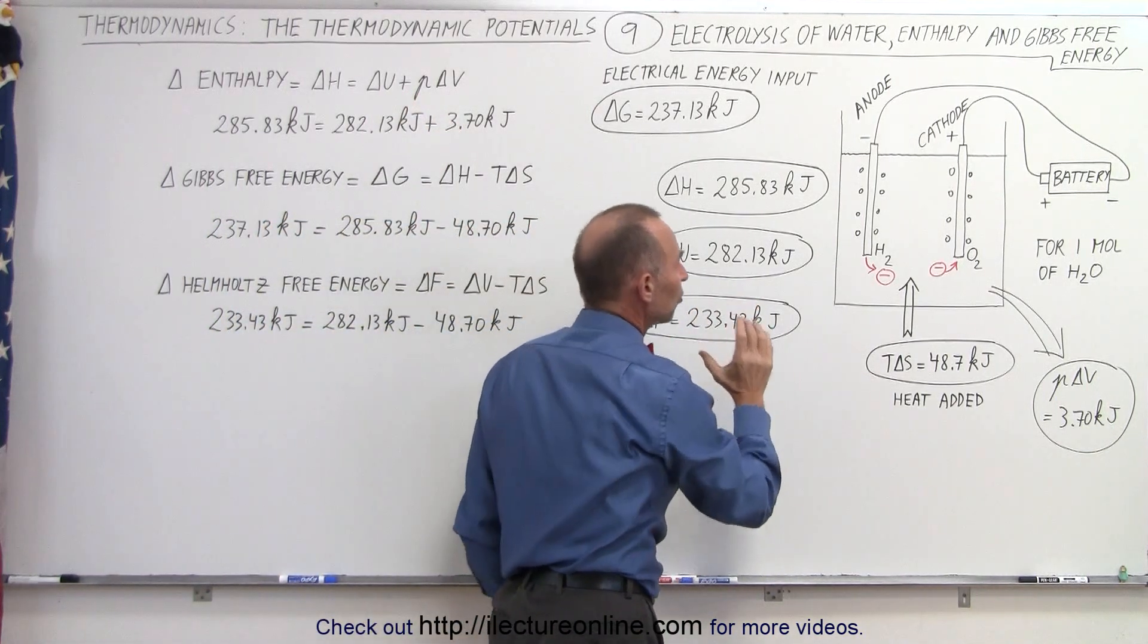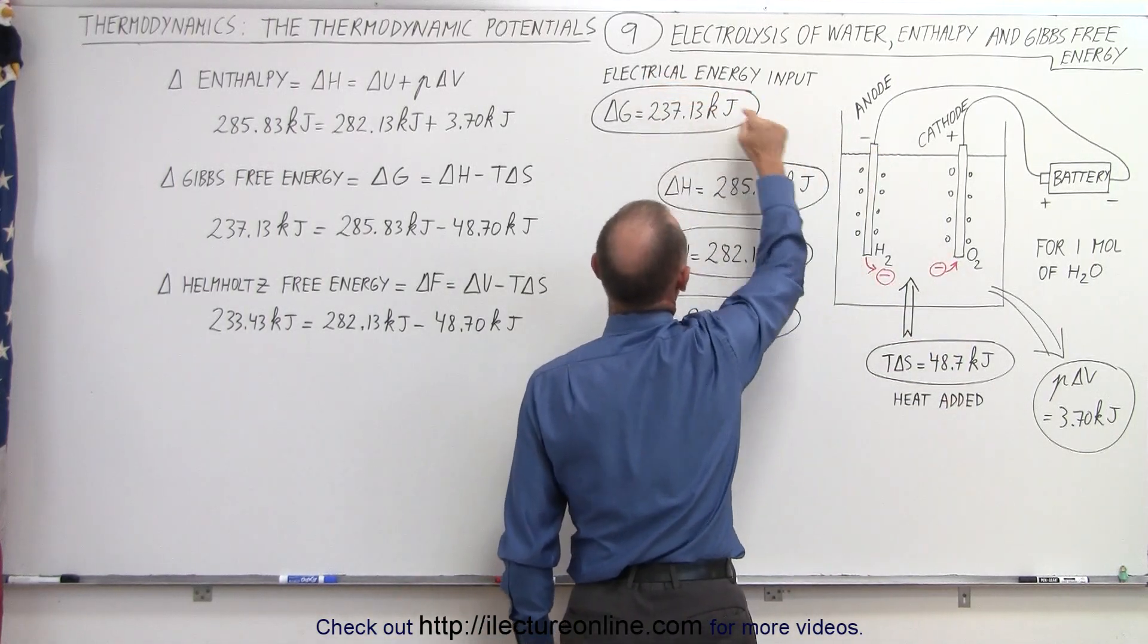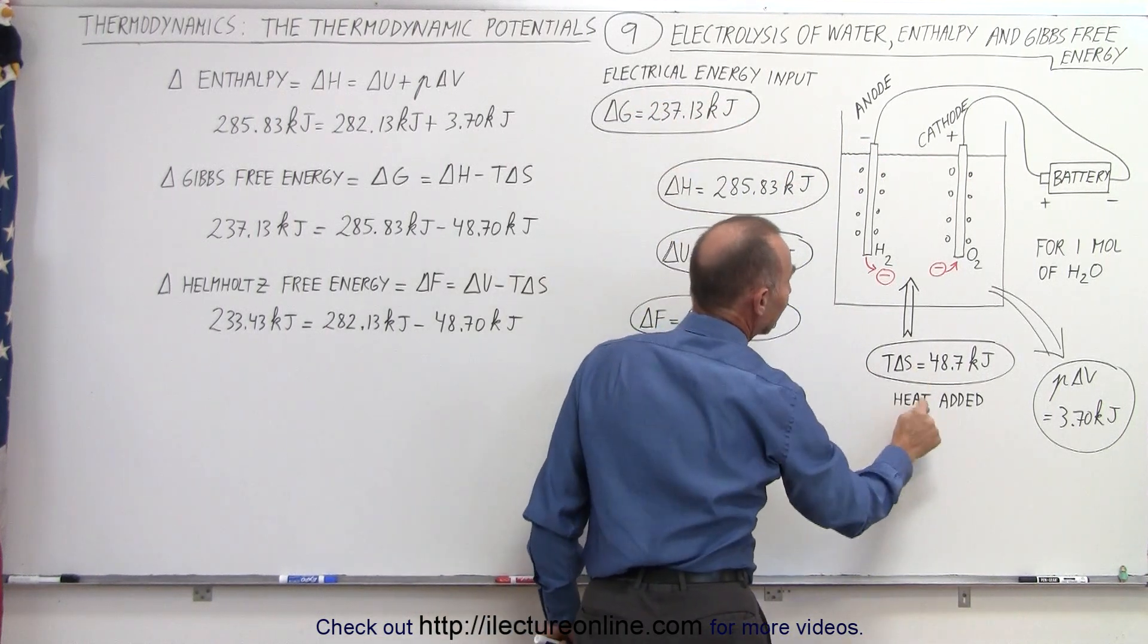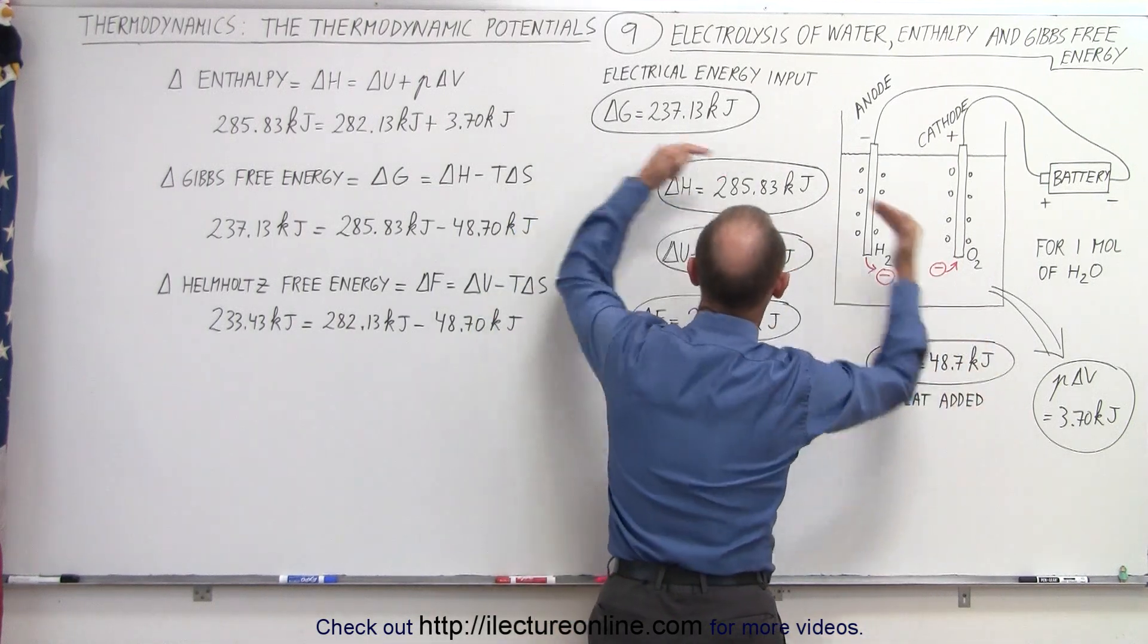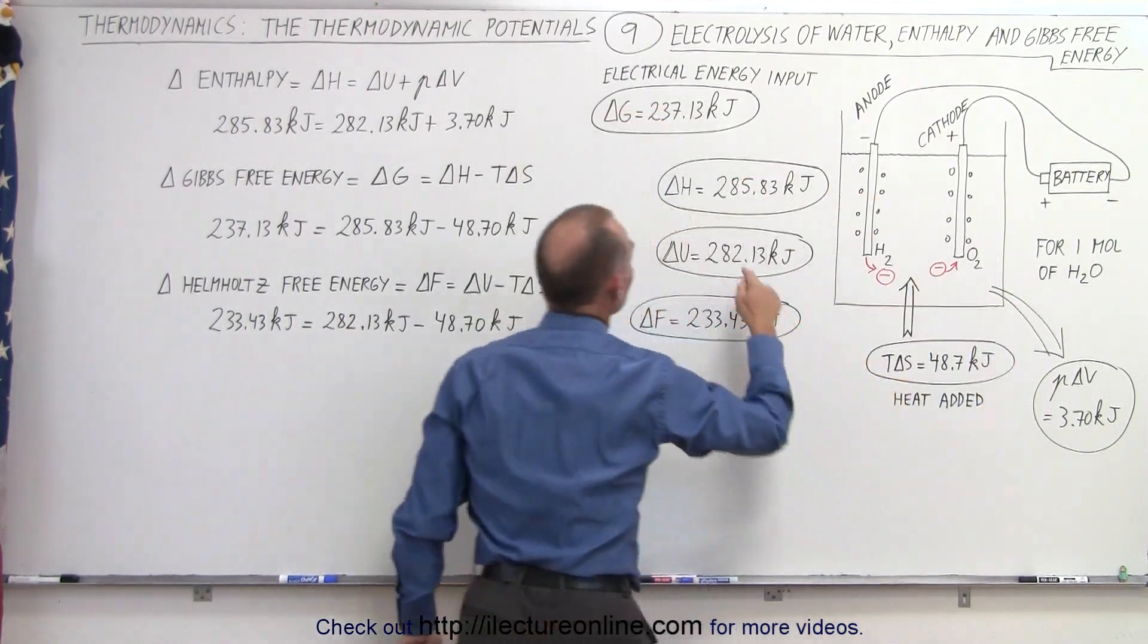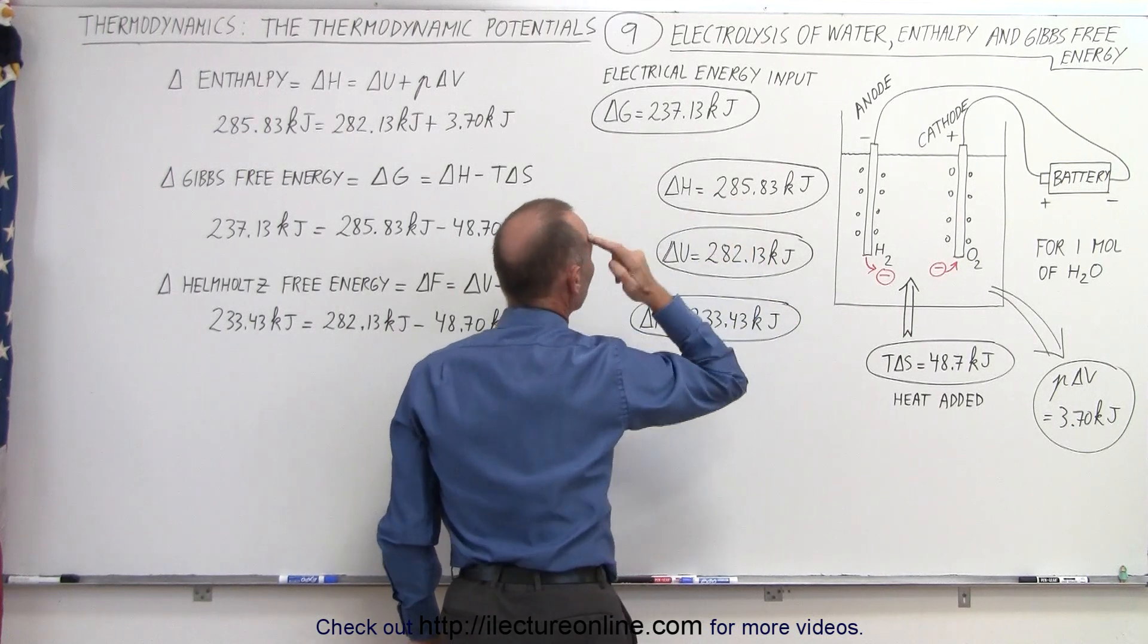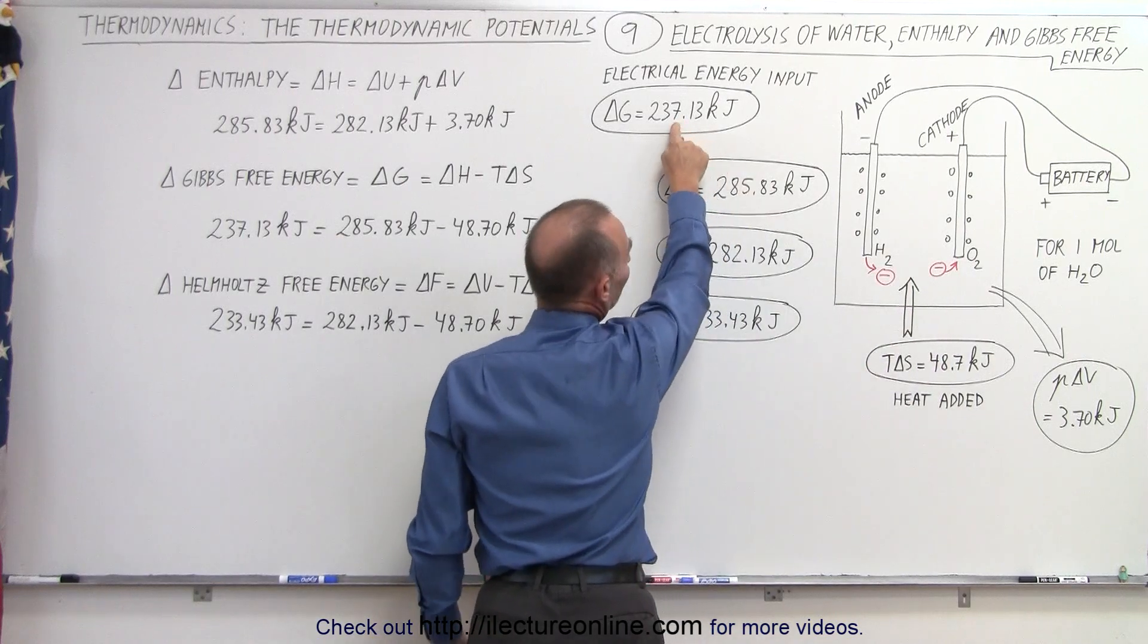Delta U is the change in internal energy. The internal energy is changed by adding heat and by adding electrical energy. So electrical energy input is 237.13 kilojoules, and the heat added is 48.7 kilojoules. That's heat introduced. That is called the enthalpy. So the enthalpy will be the sum of those two.